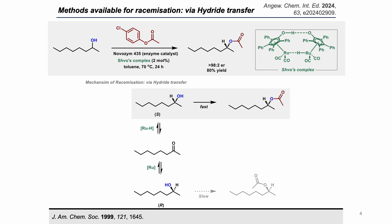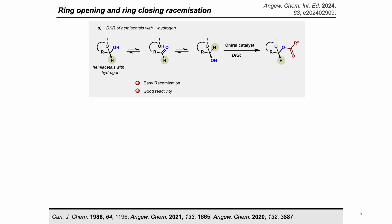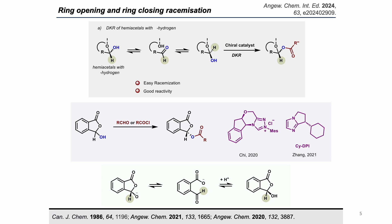A different type of racemization known in the literature is ring-opening and ring-closing racemization, which proceeds via a ketone intermediate. In 2020 and 2021, Chi and Jang utilized this type of racemization in phthalate-based systems using NHC and imidazole catalysts. This work was reported on trisubstituted alcohols.